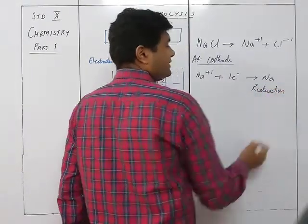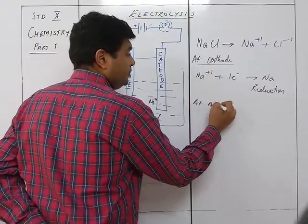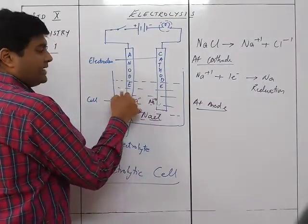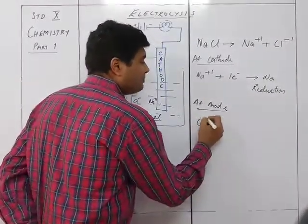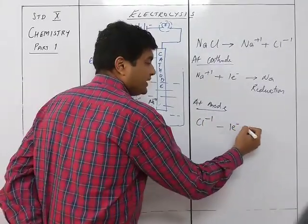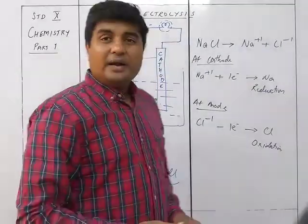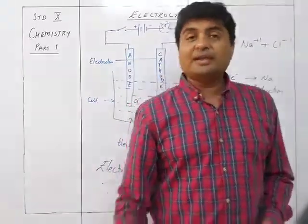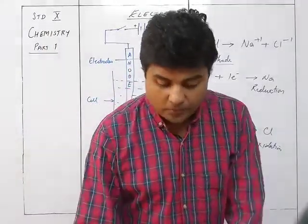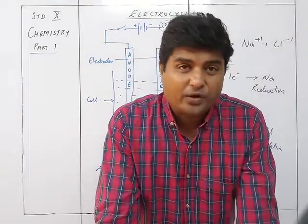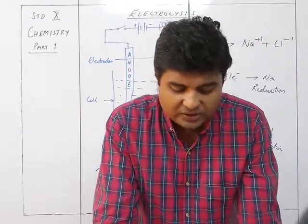Reduction means gain of electrons, and loss of electrons is oxidation. At the anode, Cl⁻ loses an electron and becomes neutral Cl — that is oxidation. So electrolysis is a redox reaction: reduction takes place at the cathode and oxidation takes place at the anode. The electrode where oxidation takes place is the anode and the electrode where reduction takes place is the cathode.